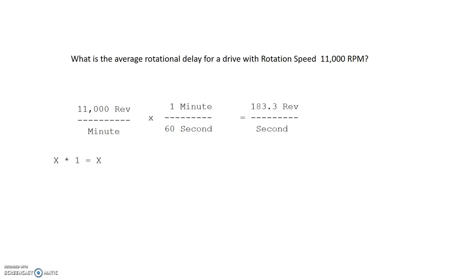And so the minute cancels out, and the 60 divides into the 11,000, and we get 183.3 revolutions per second. So at 11,000 RPM, there's 183 revolutions per second. Think how fast that is.